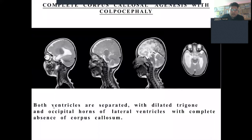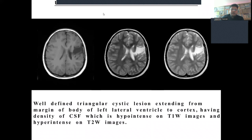This case shows dilated lateral ventricles bilaterally with absence of the occipital horns of both lateral ventricles and absence of the corpus callosum. This is a case of complete corpus callosum agenesis with colpocephaly. In this next case, we can see a well-defined triangular cystic lesion extending from the margin of the body of the left lateral ventricle up to the cortex, having CSF density — hypointense on T1 and hyperintense on T2. This is a case of unilateral open lip schizencephaly.